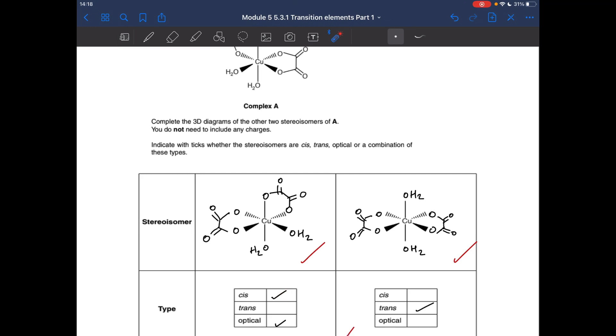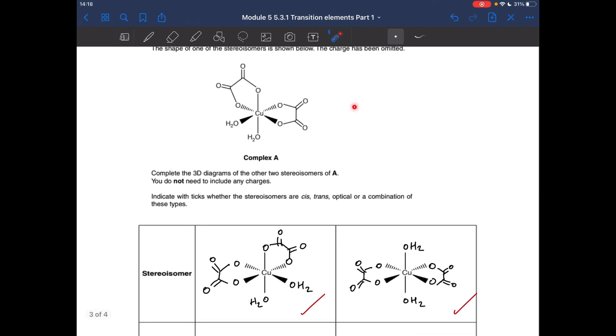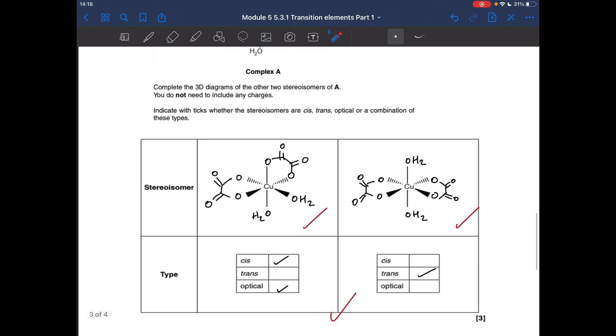So the first one I've drawn is the mirror image of that, which is this structure here. So that's the cis isomer, because if we compare this to where the water ligands are, they're 90 degrees apart, so cis, and this is an optical isomer. So it's a mirror image of that, and it's a non-superimposable mirror image. And the final one is when we take the water molecules of the ethanedioate ion ligands and put them 180 degrees apart. So this is the trans isomer, and that's it.